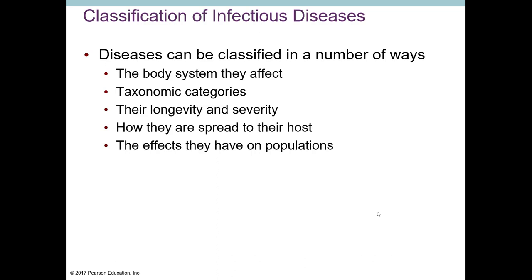You can categorize diseases by longevity and severity using words like chronic or acute. You can classify diseases by how they're spread — things that are zoonoses are only spread from animals to humans, not human to human. Diseases spread by vectors can also become a classification. These are really like descriptions — different ways of describing different aspects of a disease and its effect on a population.